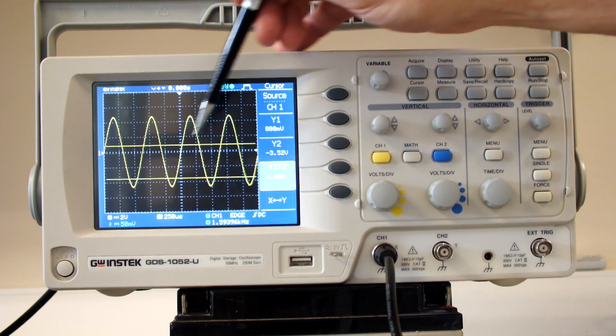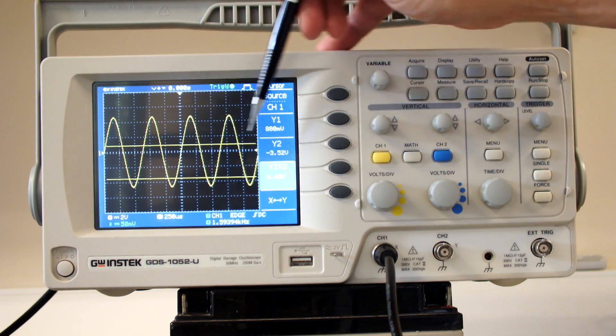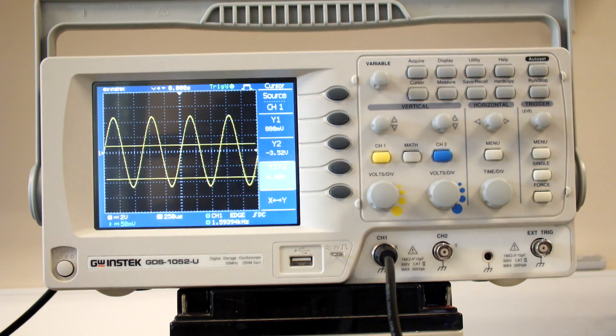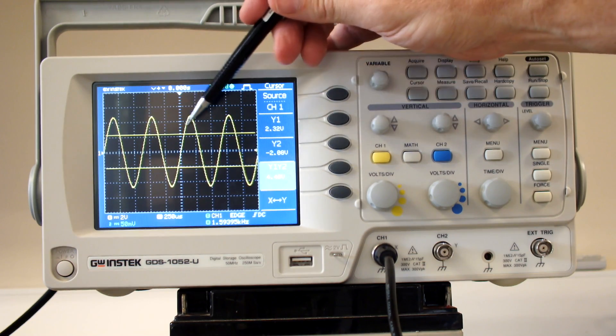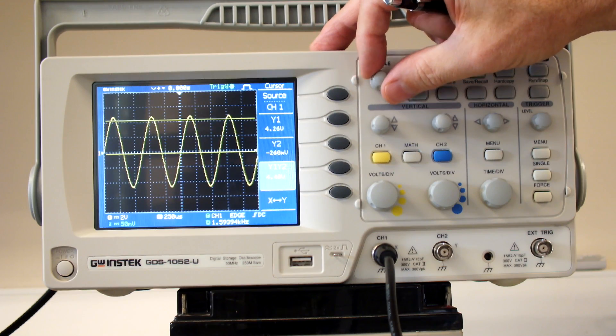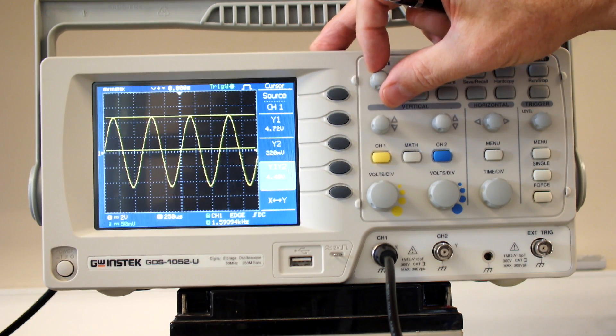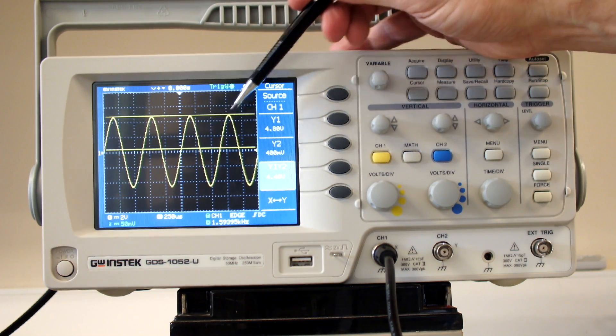It's looking on the vertical scale. That line there says it's at 880 millivolts. If I move this, I can move that line up and down. I'm lining it up so I can read where the top of my waveform is.